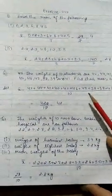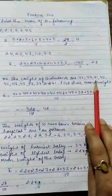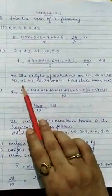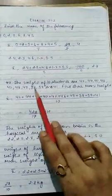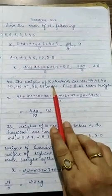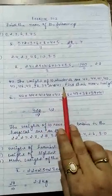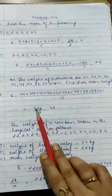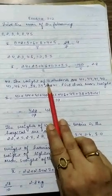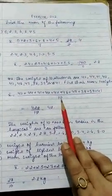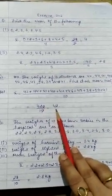Next question number 2. The weight of 10 students are 42, 44, 41, 40, 42, 46, 47, 38, 39, and 41. These are the weights given to you of how many students? 10. We have to find their mean weight. So we will add all these numbers and we will get 420 divided by how many students? 10. So divided by 10. 420 divided by 10 will be equal to 42.